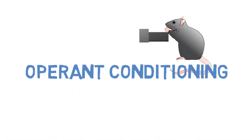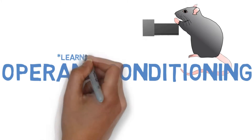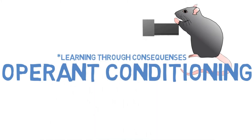Hey everyone, today I'm going to start our mini-series on learning. Before we can get into that, however, I need to get into behaviorism, and that's what these next few videos will be covering. This will be a very technical video, but it'll be pretty informative as well. To start the series out, we're going to look at operant conditioning, which is a type of learning that is controlled by the consequences.